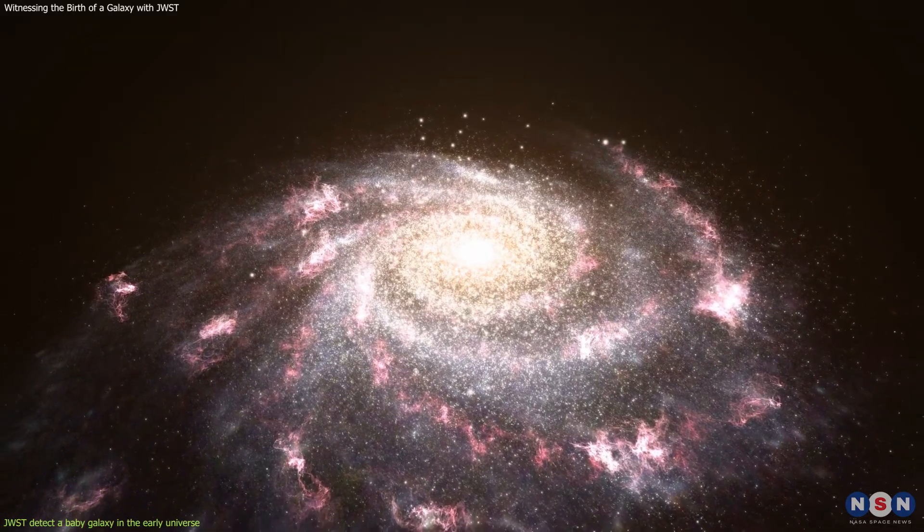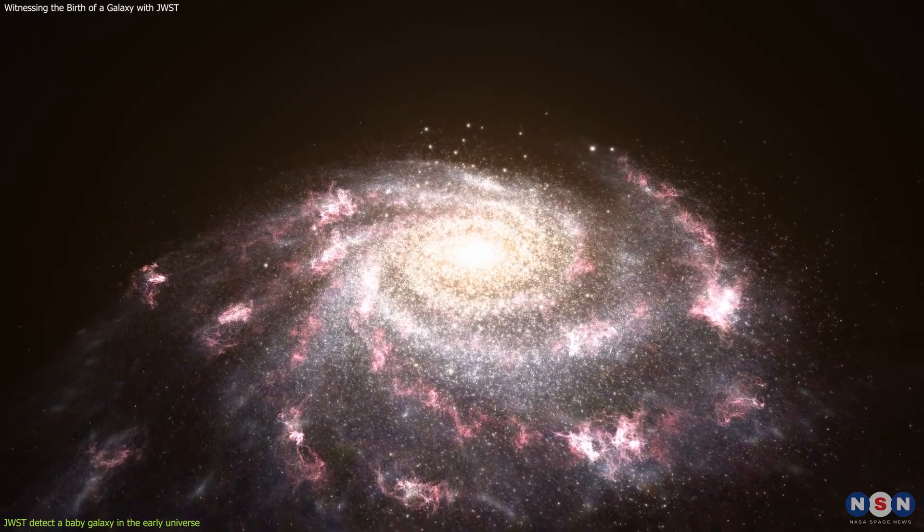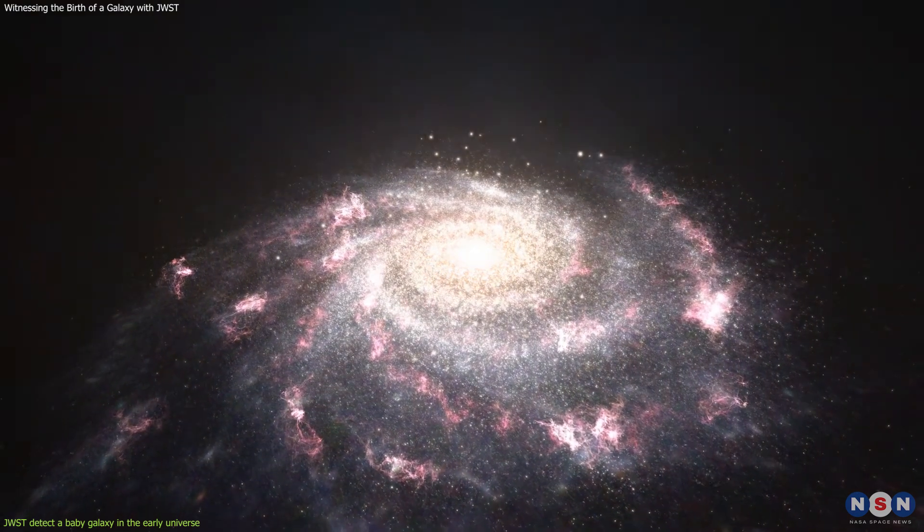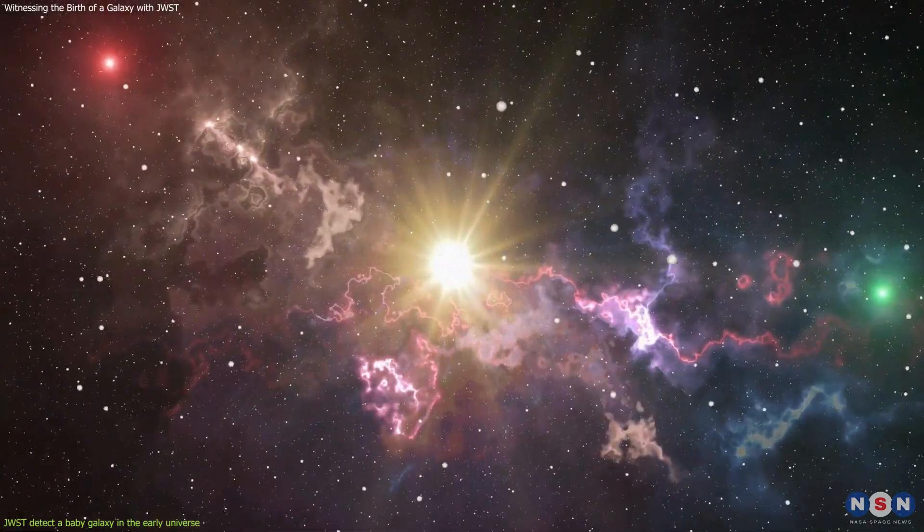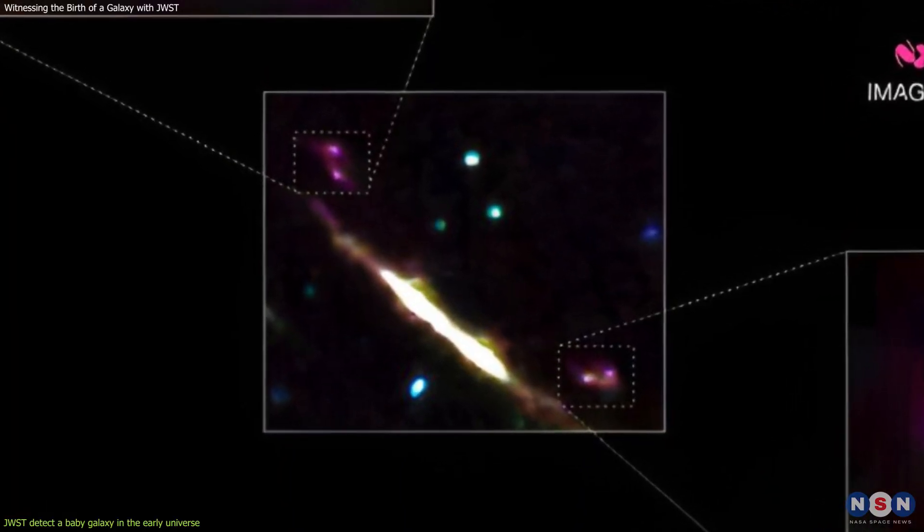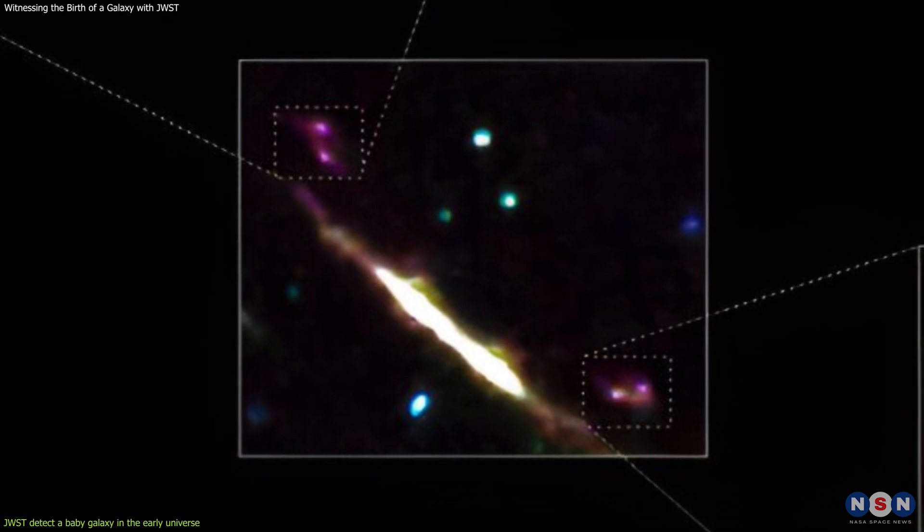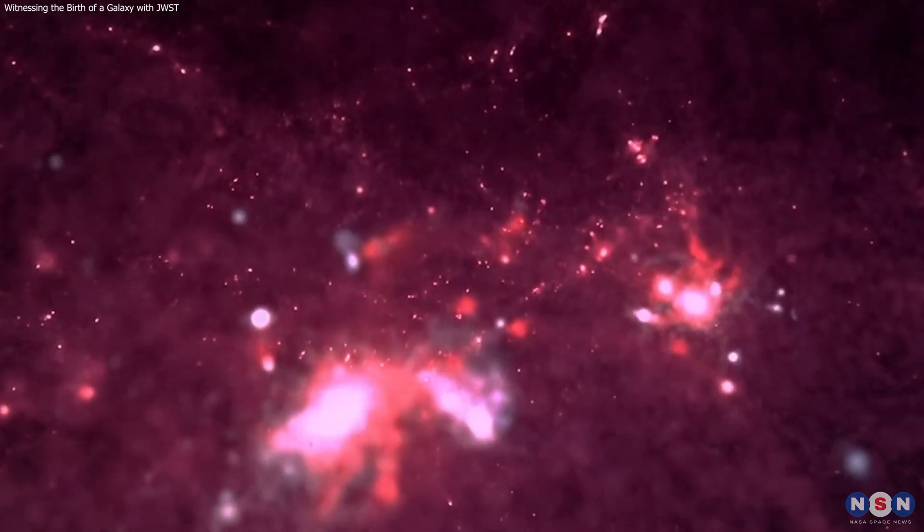It also has a very high star formation rate, producing about 200 solar masses of stars per year, or about 100 times faster than our Milky Way. These characteristics make this baby galaxy an extreme and rare example of how galaxies formed and evolved in the early universe.